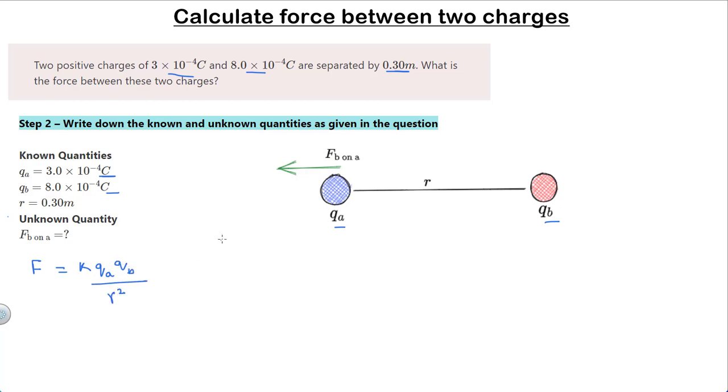Plugging in all these values, we get force F equals 9 times 10 to the power 9 newton meter square per coulomb square times 3 into 10 to the power minus 4 coulombs times 8 into 10 to the power minus 4 coulombs